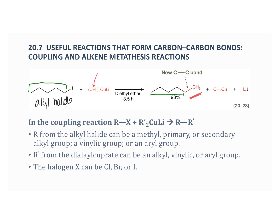The R from the alkyl halide can be methyl, primary, or secondary, a vinylic or aryl group — but notice it can't be tertiary. The R′ from the dialkyl cuprate can be an alkyl, vinylic, or aryl group. The halogen is either chlorine, bromine, or iodine. Vinylic means attached to a carbon-carbon double bond; aryl refers to a benzene ring.